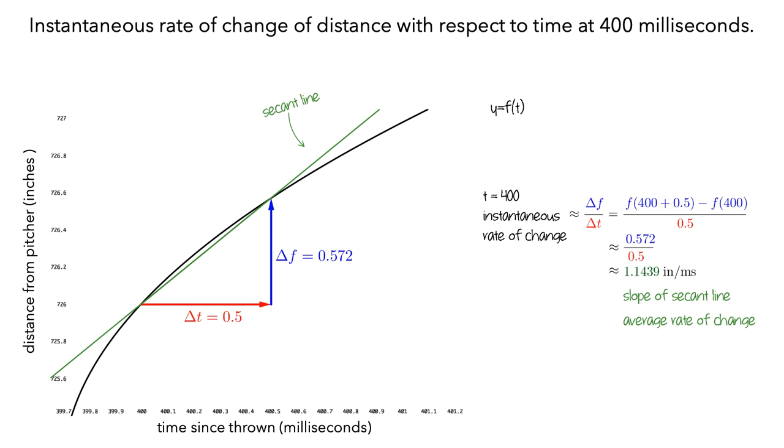This average rate is an approximation of the instantaneous rate of change. If we've only calculated an approximation of the instantaneous rates of change, how do we get the exact instantaneous rate of change at 400 milliseconds?